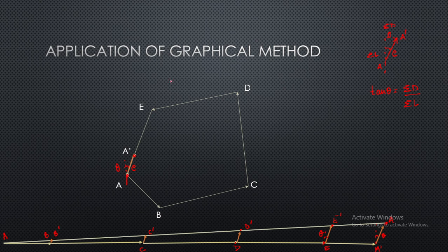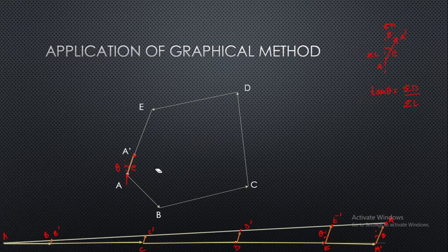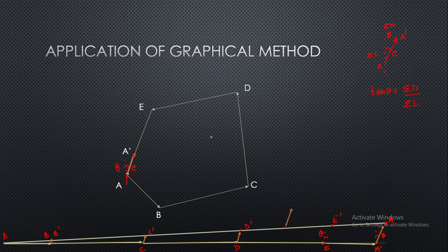How to shift this point over here? We will transfer this length from here without changing its orientation. Its magnitude is E to E dash and this will be E dash whose orientation is theta. Now similarly we will transfer D to D dash, C to C dash, and B to B dash.